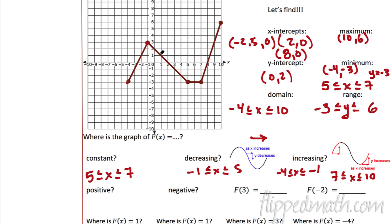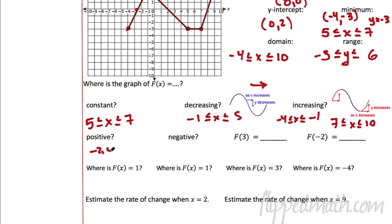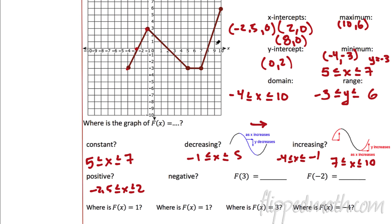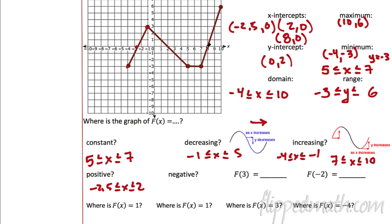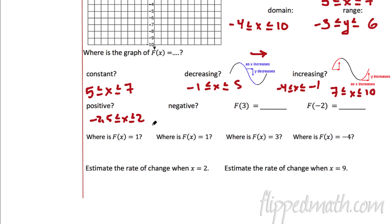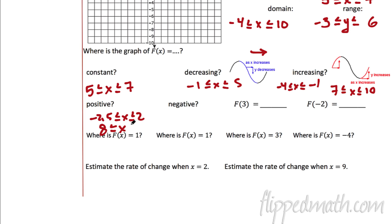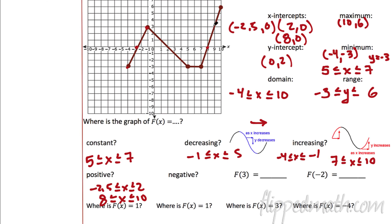Where is this function positive? That means where is it above the x-axis? It starts at about negative 2.5 — it's positive, above the x-axis. It goes all the way to 2, so from negative 2.5 all the way to 2 it's positive. Then it's negative all the way until 8, then it becomes positive again all the way to 10. So two places: from negative 2.5 to 2, and from 8 to 10 — that's where it's positive.